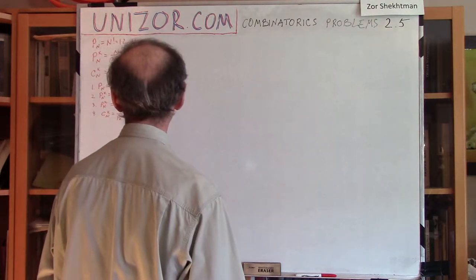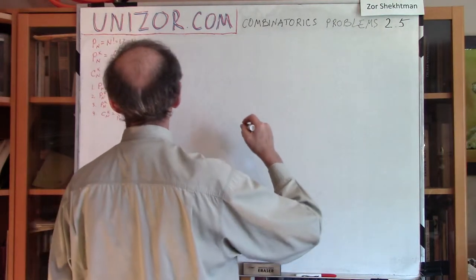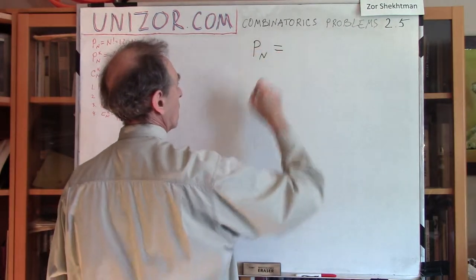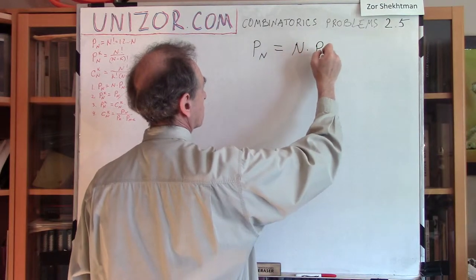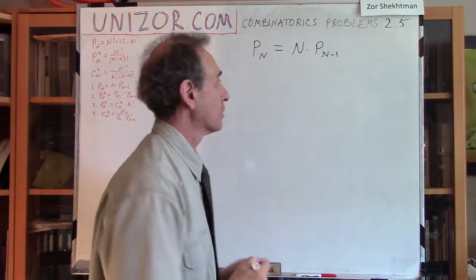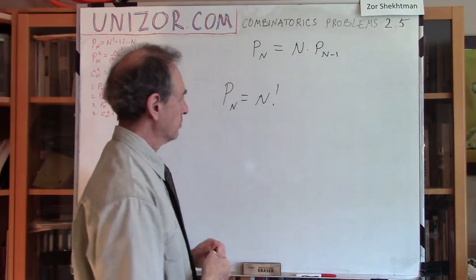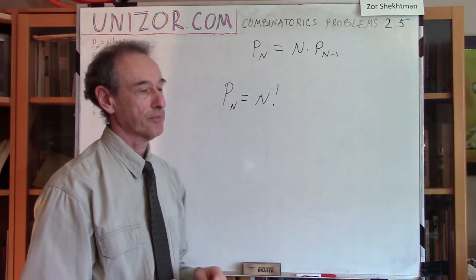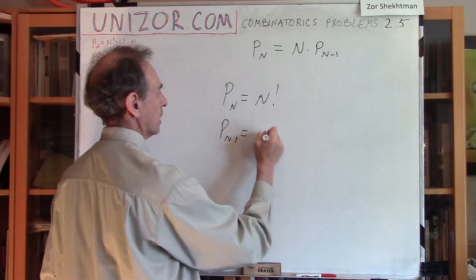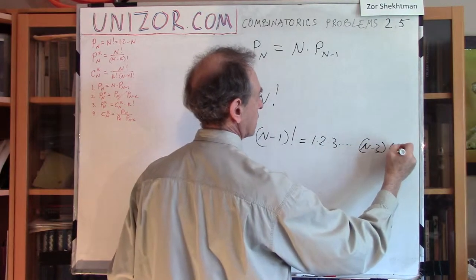Let's talk about permutations. The first problem is to prove that the number of permutations of n different objects is equal to n times the number of permutations of n-1 objects. If you know the formula for permutations — the product of all numbers from 1 to n, the n factorial — then P(n-1) equals (n-1) factorial, which is 1 × 2 × 3 × ... × (n-2) × (n-1).